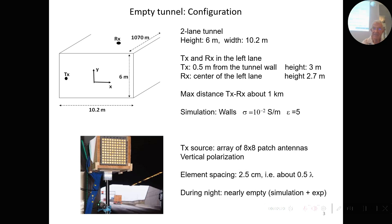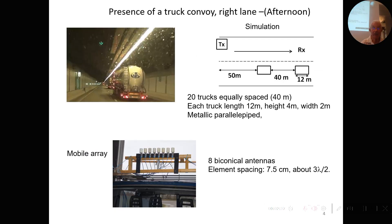The element spacing is 2.5 centimeters, approximately half a wavelength. During the night the tunnel is nearly empty, which is the time chosen for simulation and experiment. During the afternoon there is a large number of trucks moving in one lane. In the simulation we assumed 20 trucks equally spaced at 40 meters, each simulated as a metallic parallelepiped. On the other lane, a van is moving, and above this van there are eight conical vertical antennas with an element spacing of 7.5 centimeters.